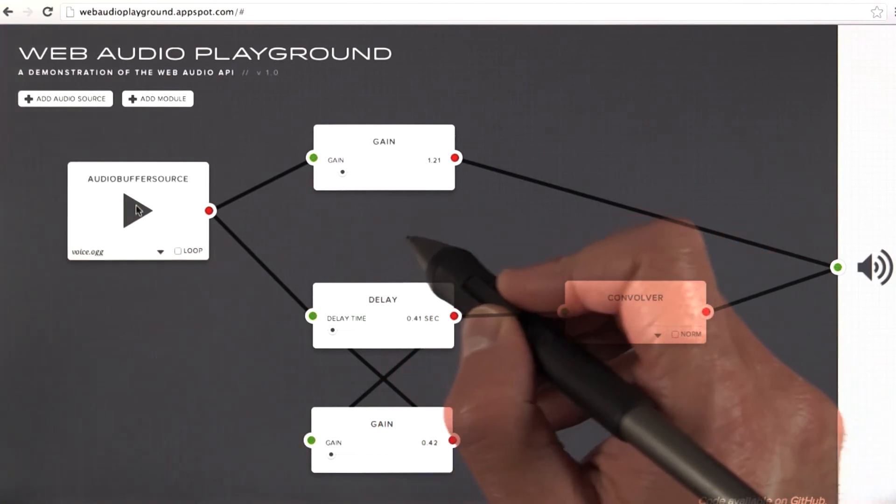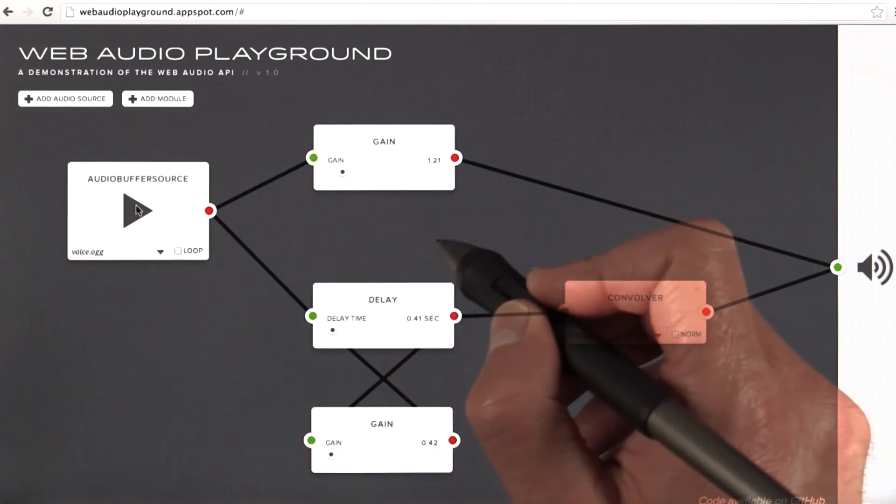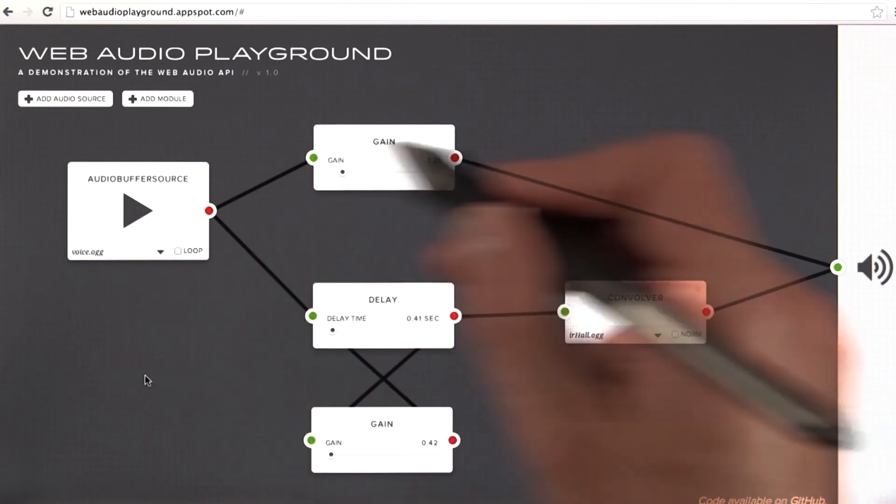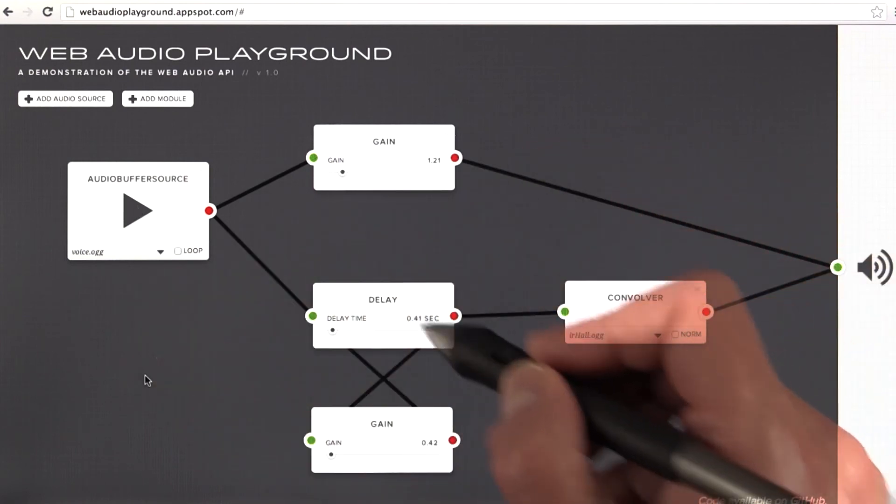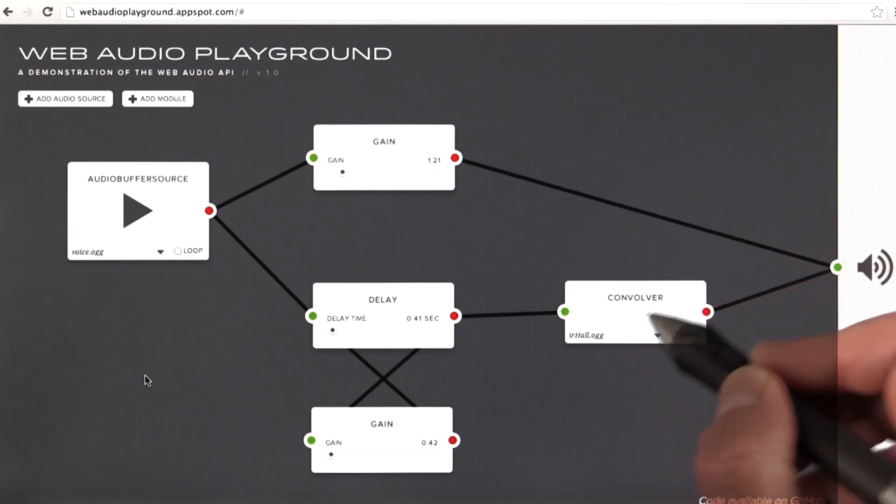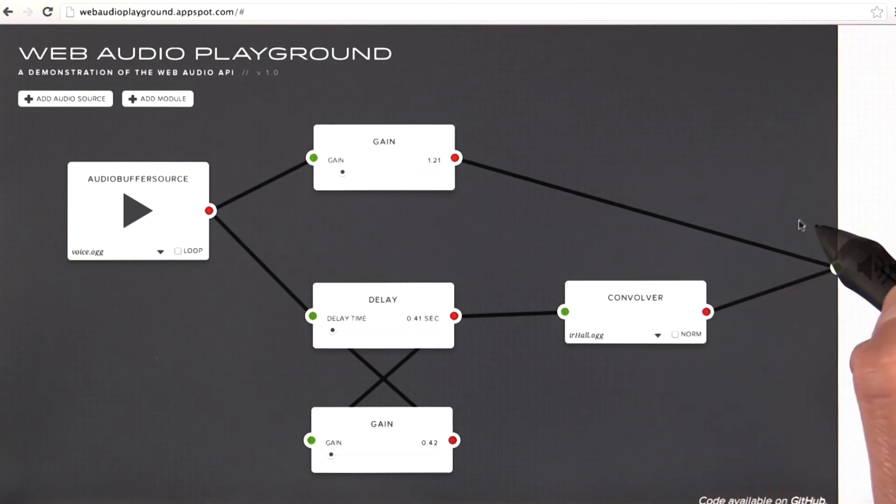Web audio is a node graph that is contained in something called an audio context. Everything in the audio context is run natively in high performance code, specifically designed for audio processing.